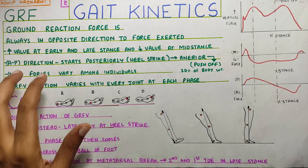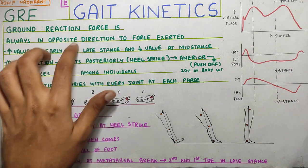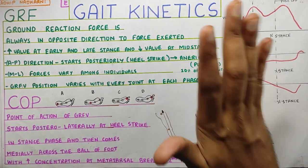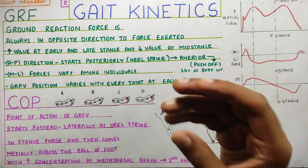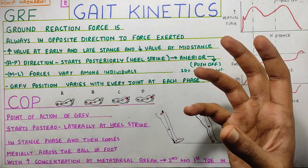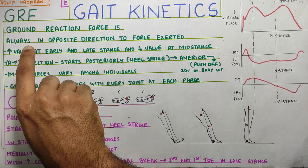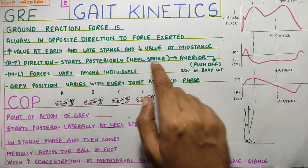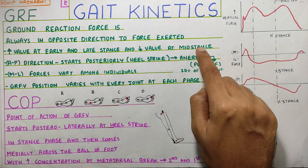What is seen is that the value is very high at early and late stance of your gait. During the stance phase, that is when the contact happens with the ground, the ground reaction force will come into the picture. The value is very high at early and late stance, and comparatively lower at the mid stance. That's what this graph is depicting.